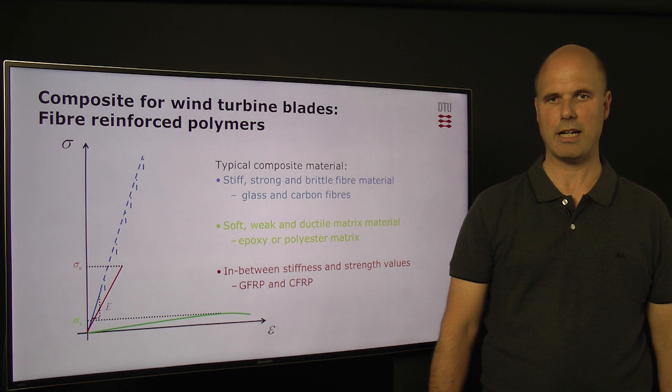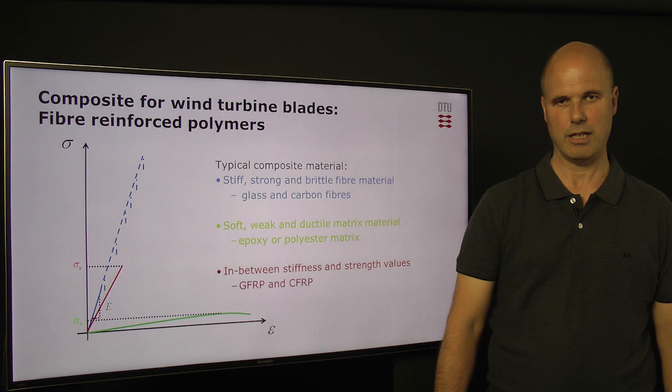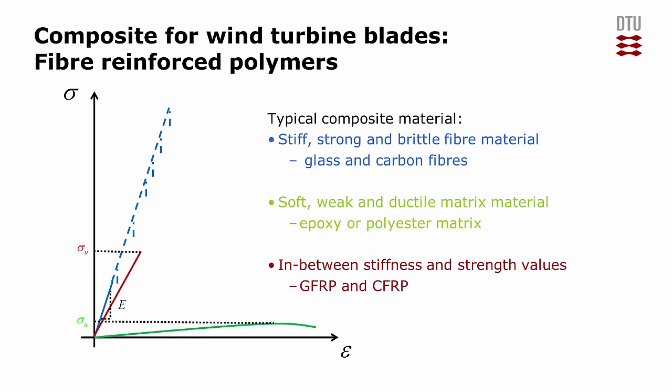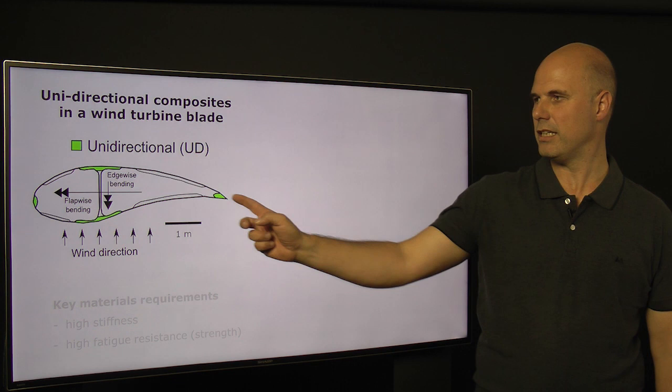Mixing these two materials together, we get a stiffness and a strength which are in between the two phases. But the strength is now predictable and we can use this in the design of a structure — we would never imagine designing something of pure glass. If we look at the cross section of a wind turbine blade, this is an illustration of that. We can see that the load-carrying part is shown as green materials at four spots.